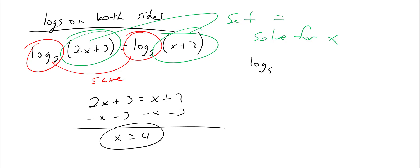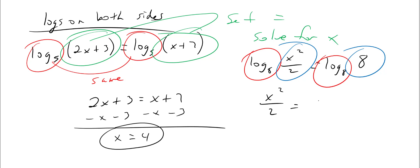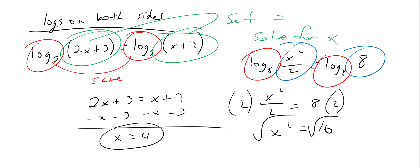Log base eight of (x squared over two) equals log base eight of eight. Same base on both sides, so set them equal: x squared over two equals eight. Multiply both sides by two: x squared equals 16. Take the square root — always plus or minus — so x equals plus or minus four.